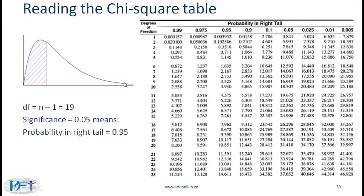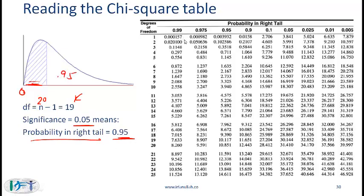The chi-square distribution is bounded at 0 because variance cannot be negative. We need the degrees of freedom, which is n minus 1. In our example n is 20, so degrees of freedom is 19. At a significance of 0.05 — meaning the left part of the distribution — the probability in the right tail is 0.95. Looking at the chi-square table for 0.95 with 19 degrees of freedom, the critical value is 10.1.